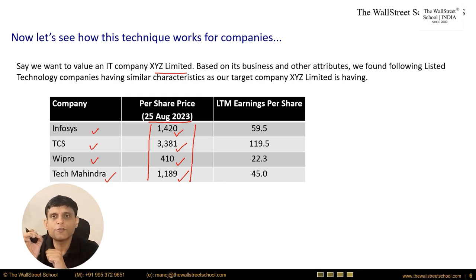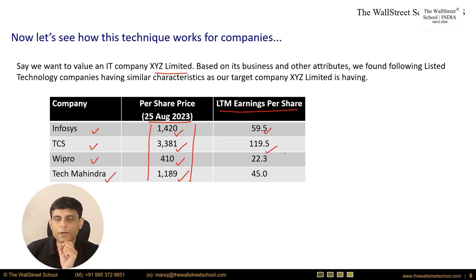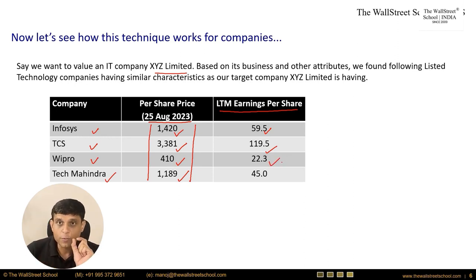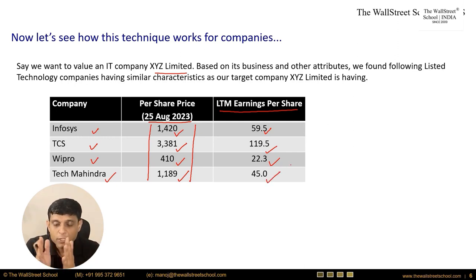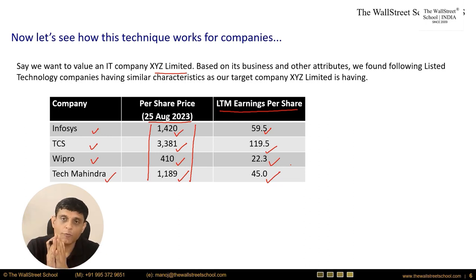These absolute share prices are not comparable because each company has different earnings per share. The latest 12-month EPS figures are: Infosys ₹59.5, TCS ₹119.5, Wipro ₹22.3, and Tech Mahindra ₹45 per share. Since earnings per share differ, we must convert absolute prices into a standardized measure of value.